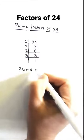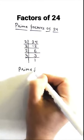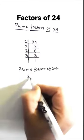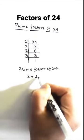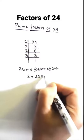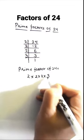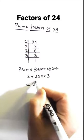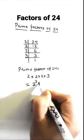So the prime factors of 24 are 2 times 2 times 2 times 3, which can also be written as 2 to the power 3 times 3.